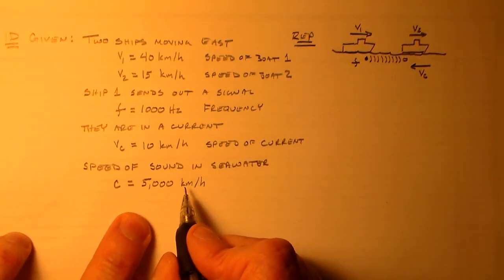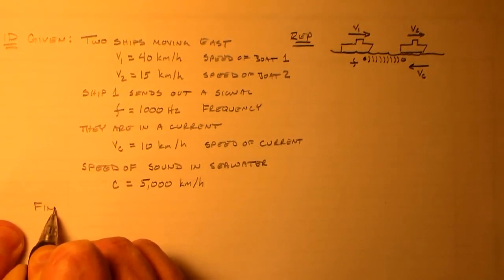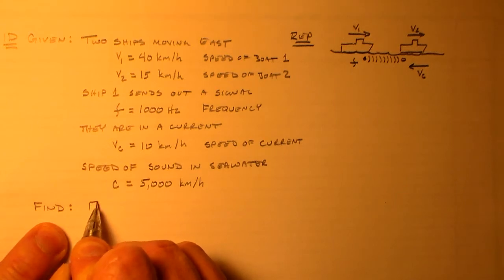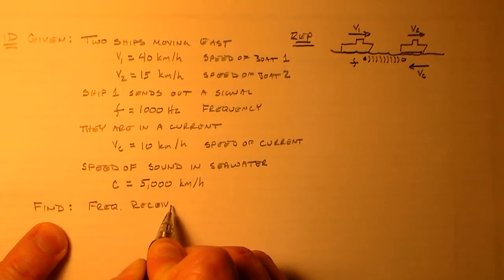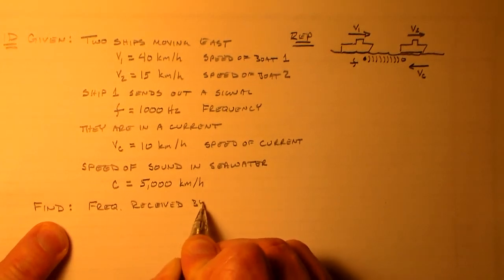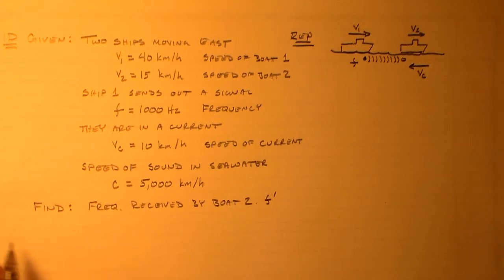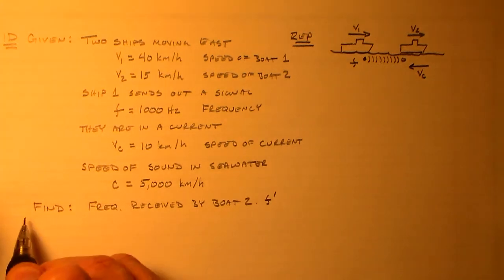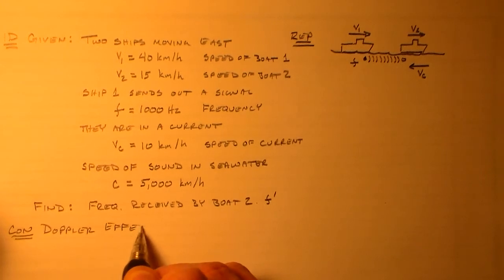So I guess we've got all of these fun things here and we ought to ask ourselves what we want to find. And we want to find the frequency received by boat two. We'll call that F prime. So we've got an ID, we've got a rep. So let's figure out what our concept is. And that's just the Doppler effect.